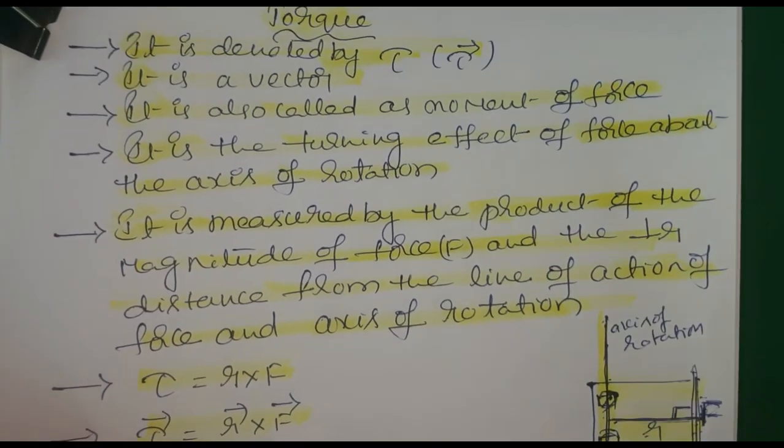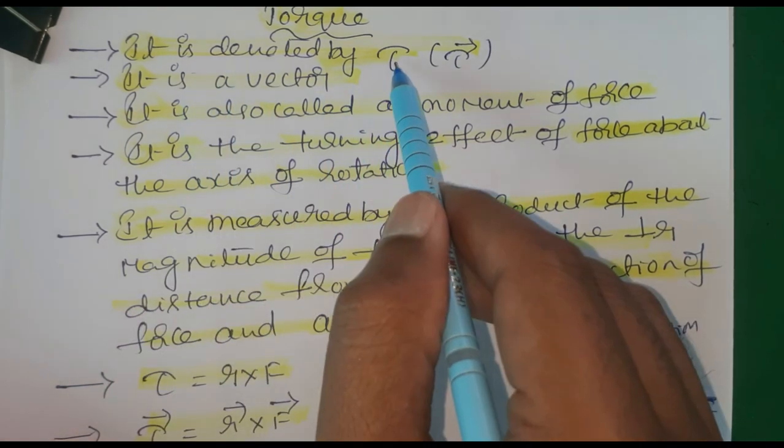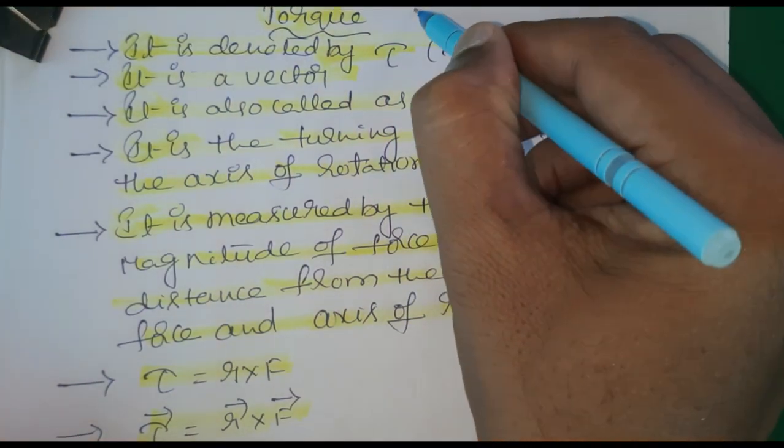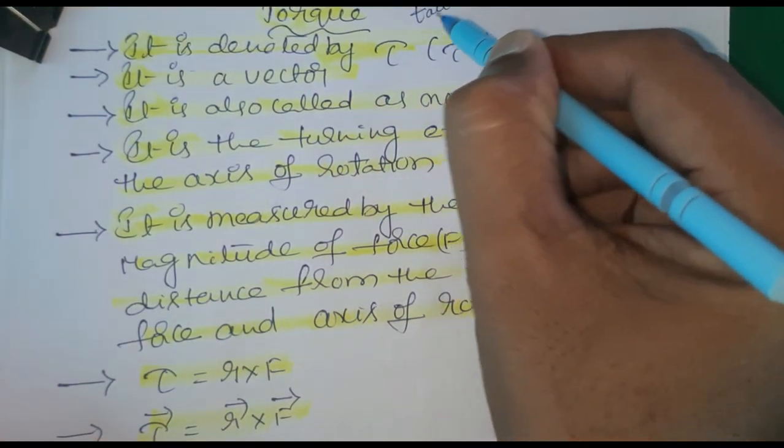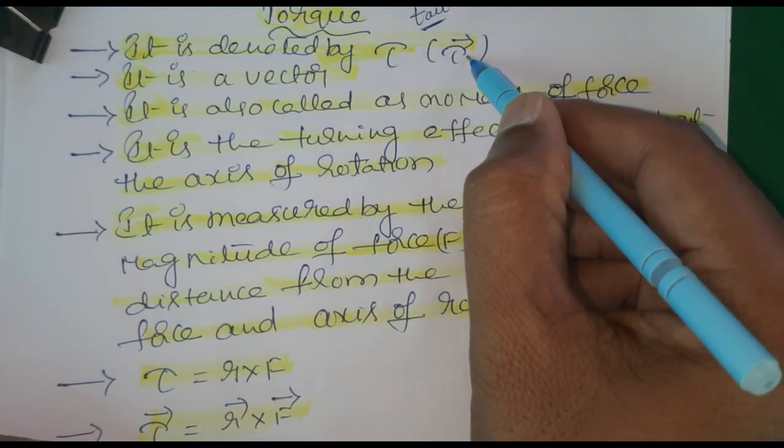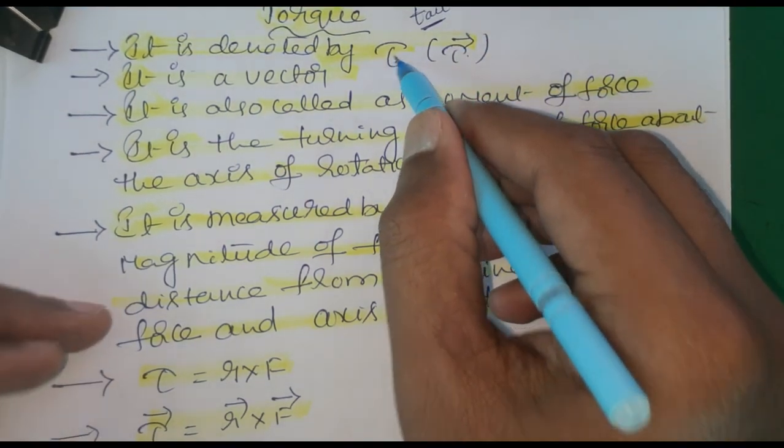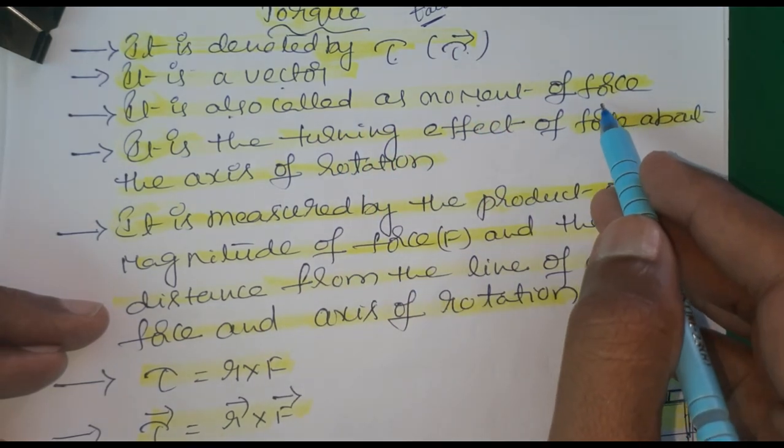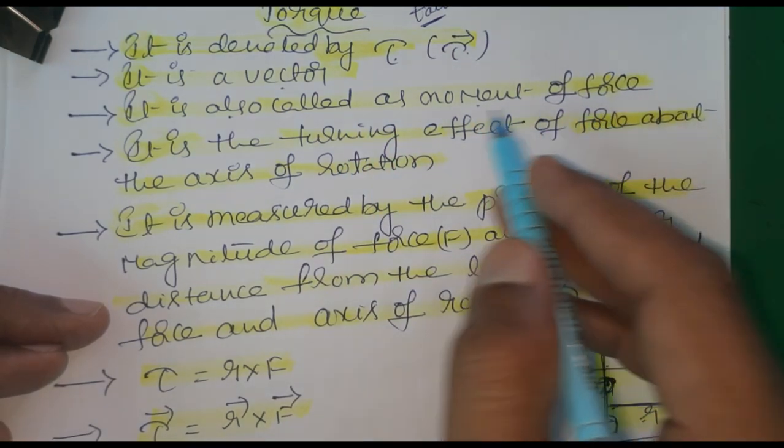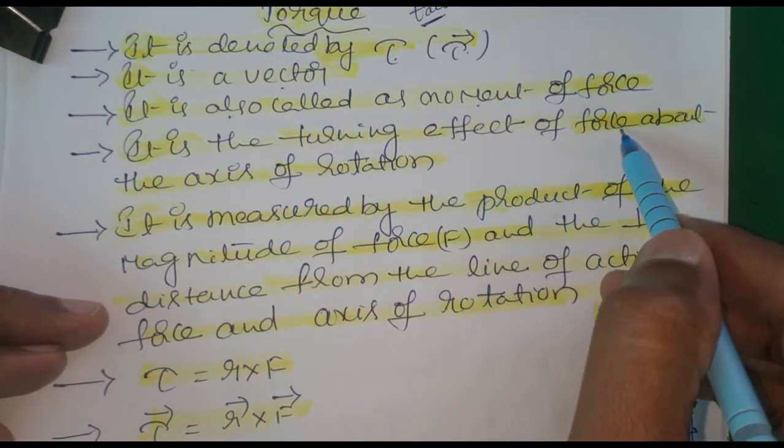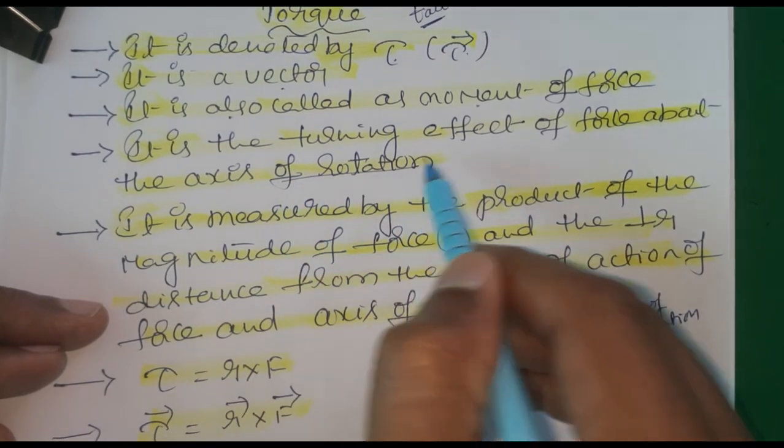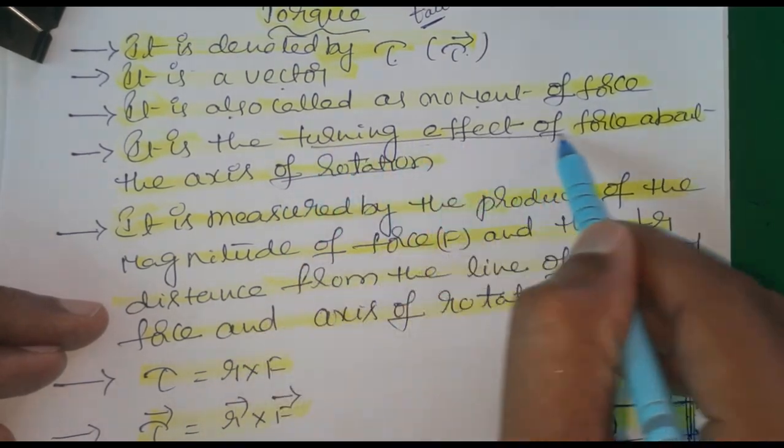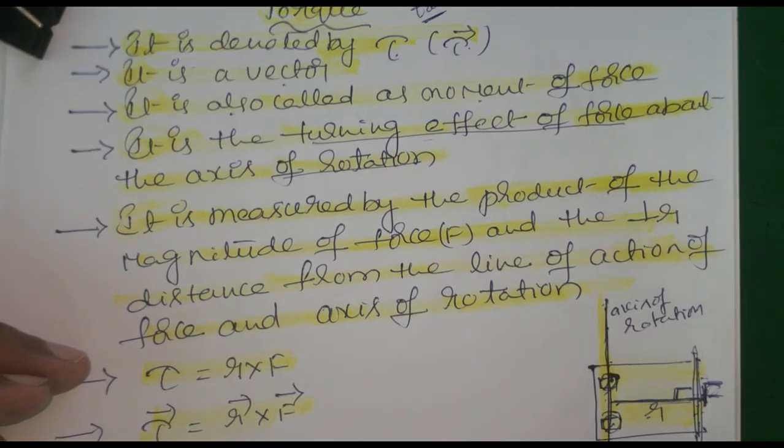Now clearly the definition - it is denoted by tau (τ). We call it tau. It is a vector, so we write tau bar (τ̄). Magnitude is just tau. It is a vector. It is also called moment of force. Another name is moment of force. It is the turning effect of force about axis of rotation.